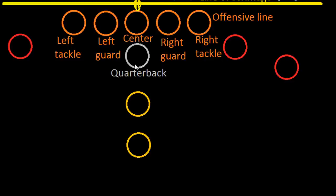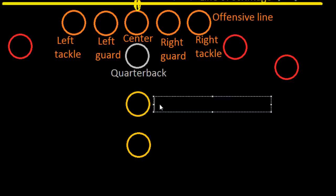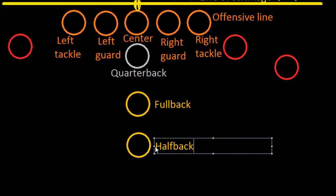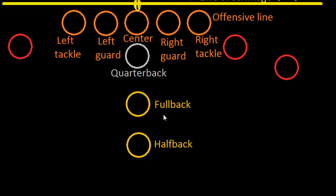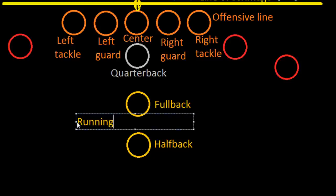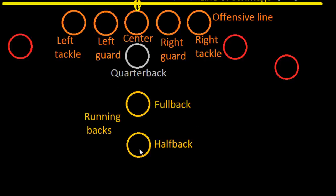Right behind the offensive line is the quarterback. The center snaps the ball back to him, and then the quarterback has a decision — he can either pass the ball or hand it off. For a handoff, he turns to one of the guys behind him. These two are the fullback and the halfback — perhaps a bit misnamed, since you might think the fullback would be further back, but that's not the case. Both are considered running backs, and typically the quarterback will hand off to the halfback to run with the ball.